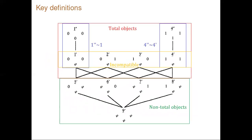To see it more directly, you can check the image. In the green box are the non-total objects, and in the red box the remaining objects are total objects of DDD. All four functions in the yellow box are incompatible with each other, and the functions on the right and left sides are in the same equivalence classes — one-prime-prime and one-prime are in the same equivalence class, and four-prime-prime and four-prime are in the same equivalence class.